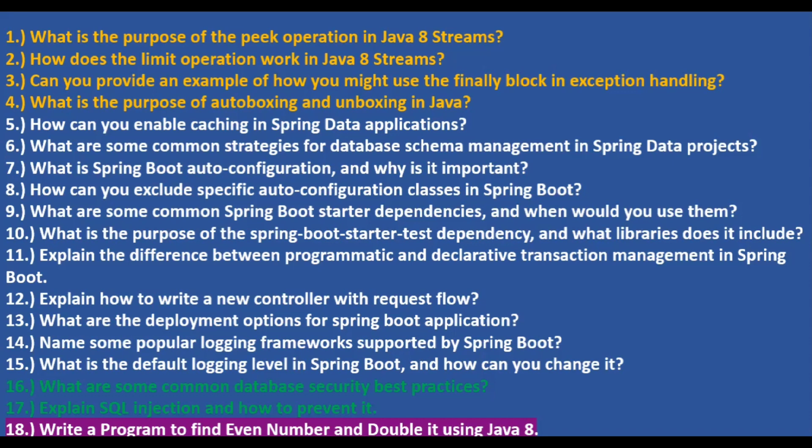How can you exclude specific auto configuration classes in Spring Boot? To exclude auto configuration classes, you can use the 'exclude' attribute of the @SpringBootApplication annotation. Providing that attribute to your @SpringBootApplication will exclude the specified auto configuration classes.